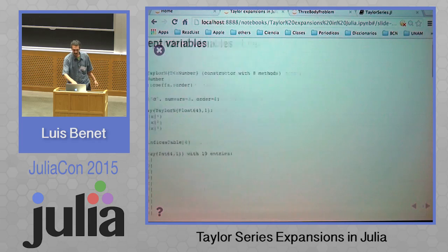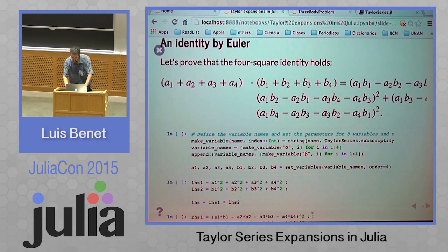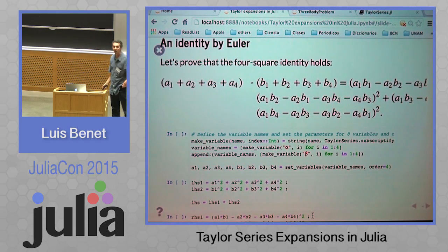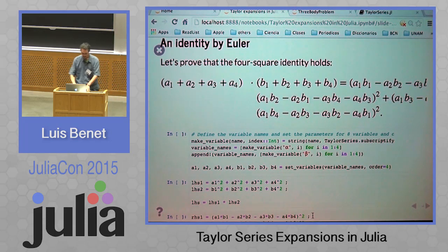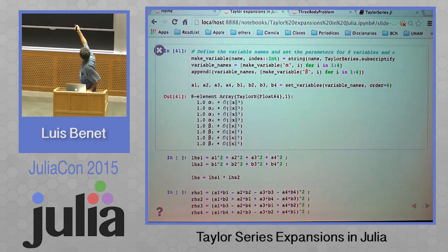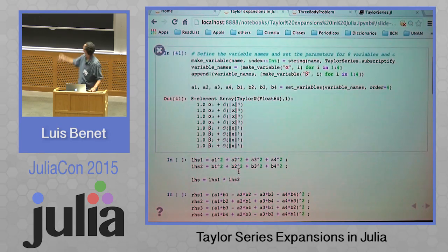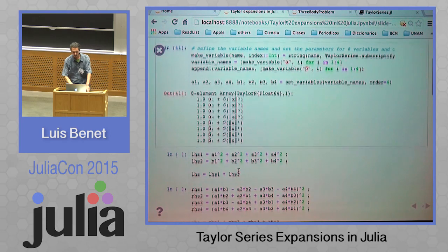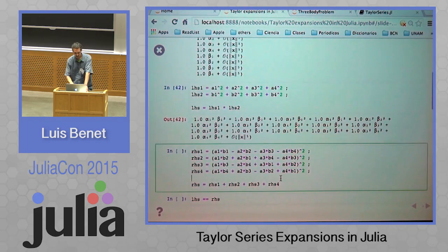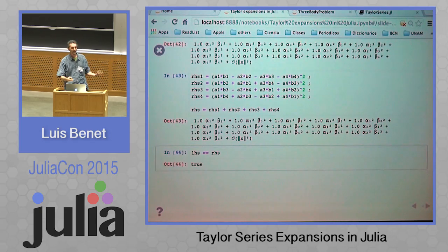The very basic structure is already there and can be extended further. This is an identity proved by Euler a long time ago — a product on four different variables that gives a very nice polynomial. Let's prove it right here. I have created my set of variables; I need eight variables of order four. The reason for order four is that we are multiplying two second-order polynomials. We define the left-hand side, define the right-hand side, check whether they are the same — and yes, they are.